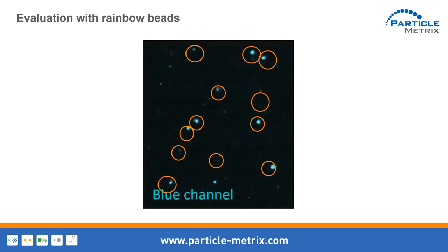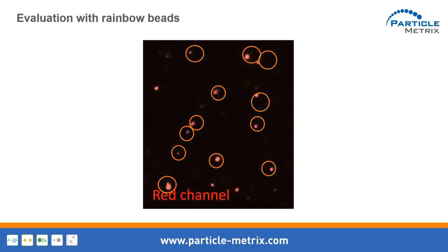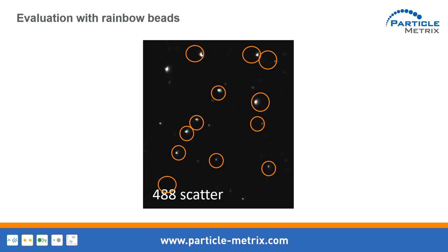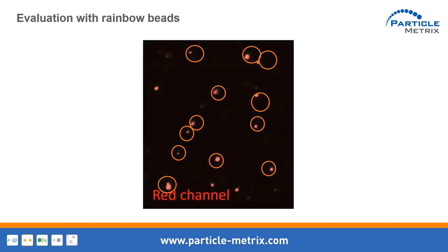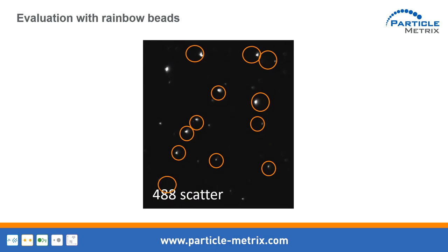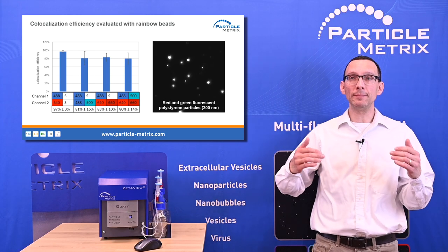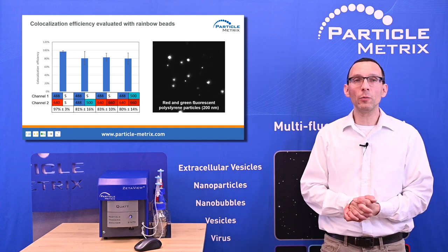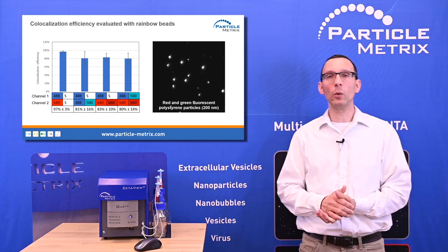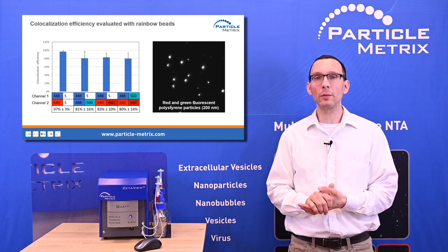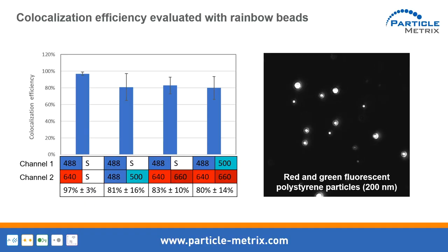The concentration must also be matched — if it is too high, artifacts appear in the linking. But at the typical measurement range of the instrument there is no problem, as the software detects such issues and calculates the co-localization efficiency. Evaluating the different modes — scatter-to-scatter, scatter-to-fluorescence, and the most challenging, fluorescence-to-fluorescence — we achieve more than 80 percent linking efficiency. Switching between lasers in scatter mode gives almost 100 percent co-localization efficiency, which is very encouraging.